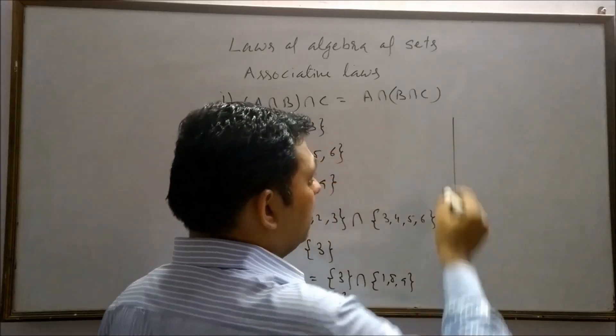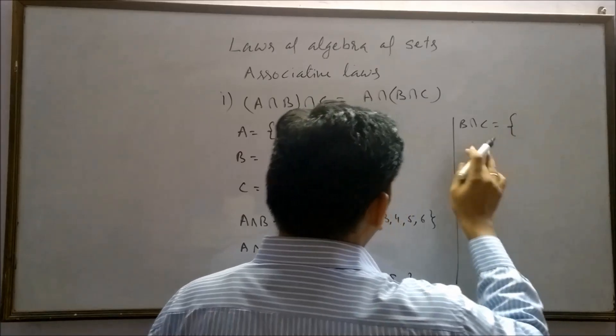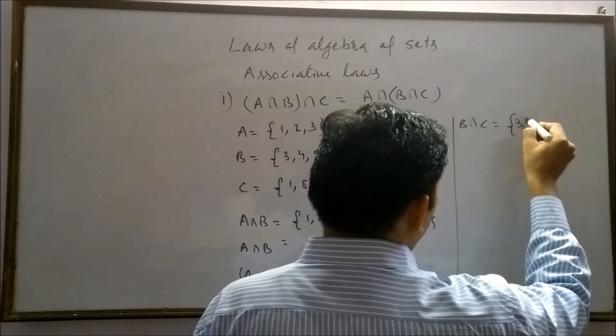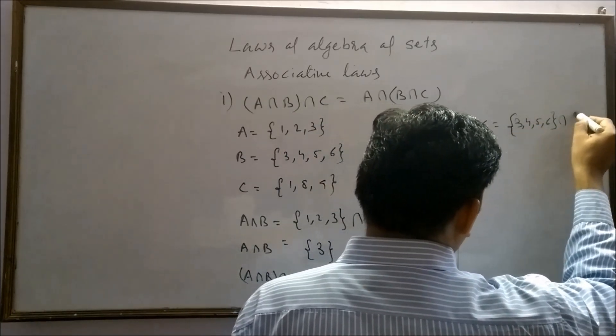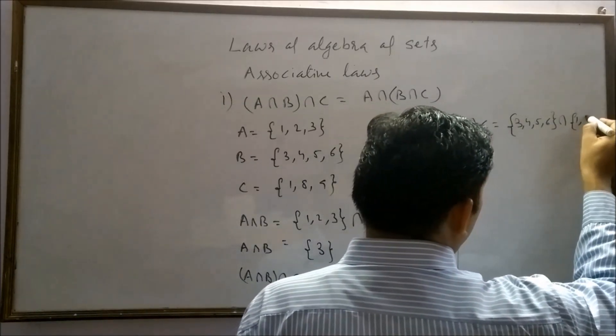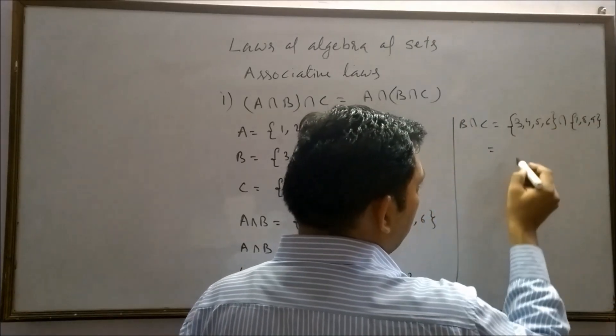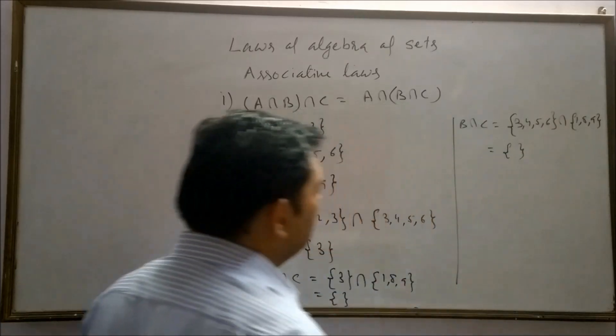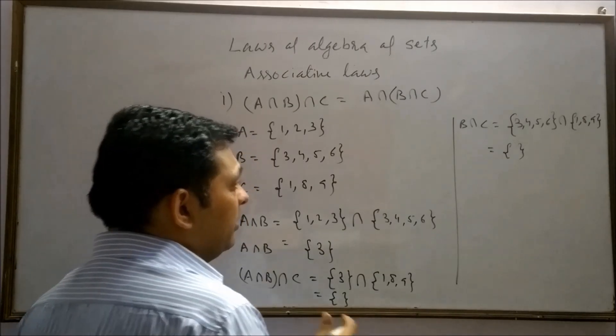Here in similar manner, B intersection C will equal to B is here 3, 4, 5, 6, intersection C contains 1, 8, 9. Intersection means there is no common element between B and C. That's why we will get empty set.